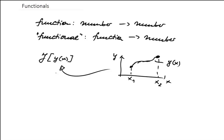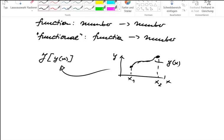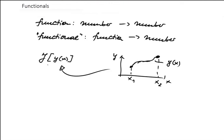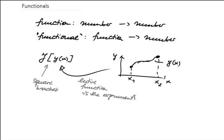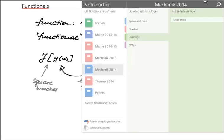To distinguish functions from functionals, I would like to use square brackets for the argument, so the entire function is the argument. Let me give you a simple example — it sounds a bit abstract, so let me give a concrete one.